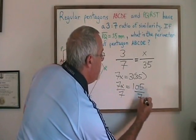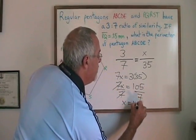If I divide both sides by 7, my X is isolated and is equal to 15.